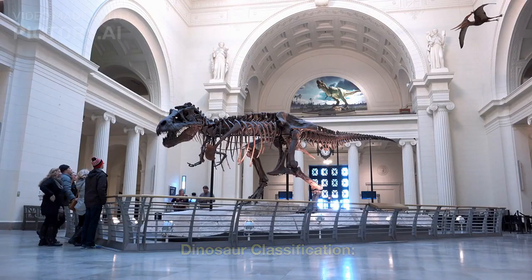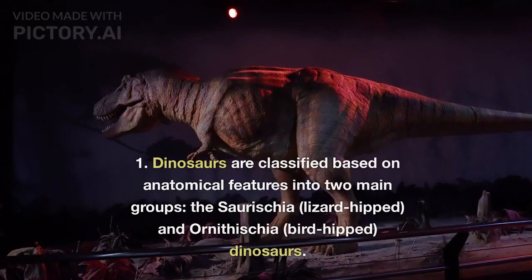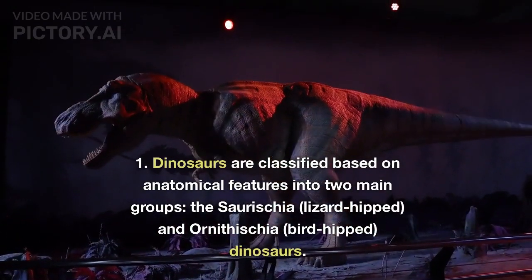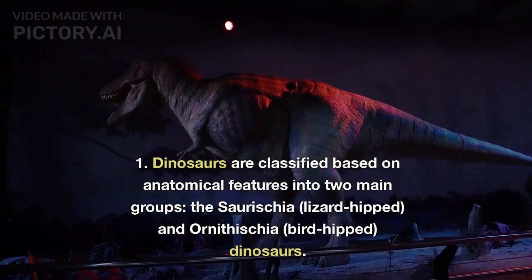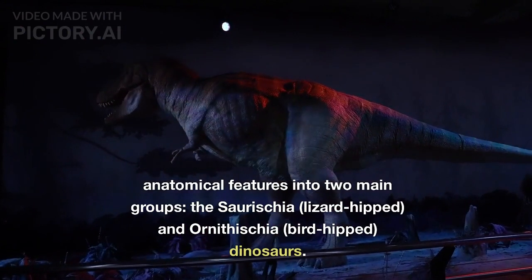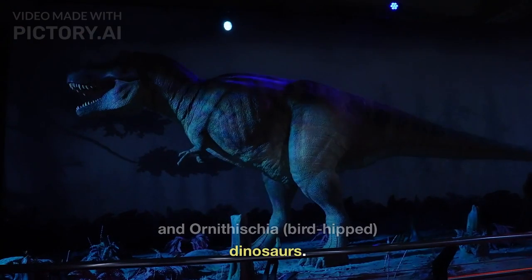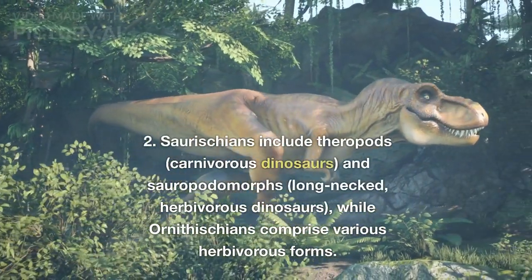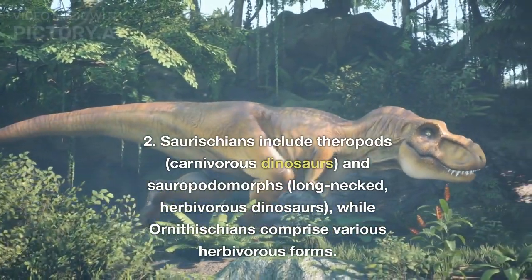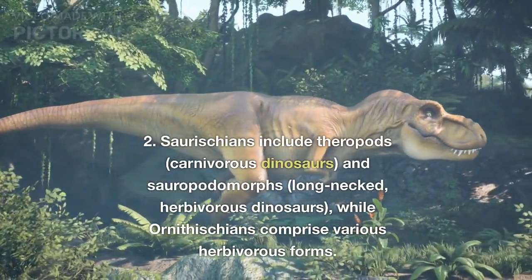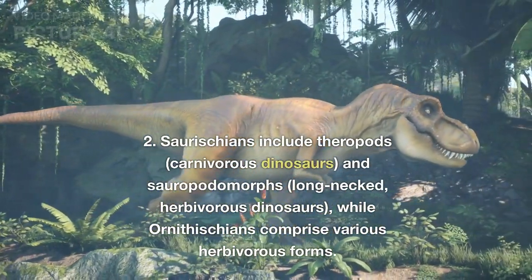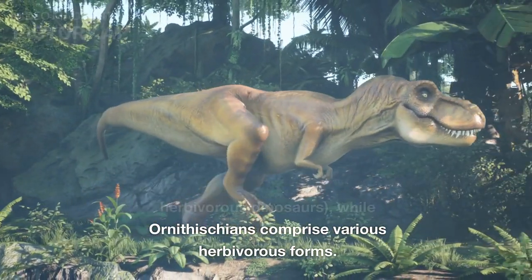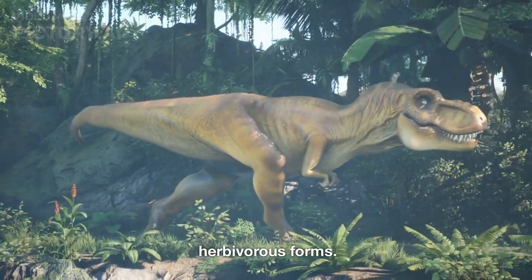Dinosaur Classification. Dinosaurs are classified based on anatomical features into two main groups: Saurischia, lizard-hipped, and Ornithischia, bird-hipped, dinosaurs. Saurischians include theropods, carnivorous dinosaurs, and sauropodomorphs, long-necked herbivorous dinosaurs, while Ornithischians comprise various herbivorous forms.